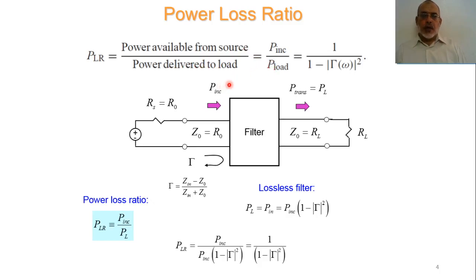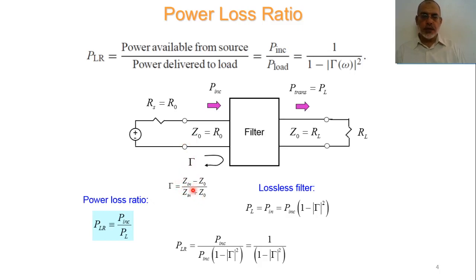We normalize with respect to the incident power, setting incident power equal to 1. The delivered power to the load is then 1 minus |Gamma|², where Gamma is the reflection coefficient at the input port of the filter. Gamma is defined as (Z_in - Z_0) / (Z_in + Z_0), where Z_in is the input impedance of the filter loaded with the load resistance.